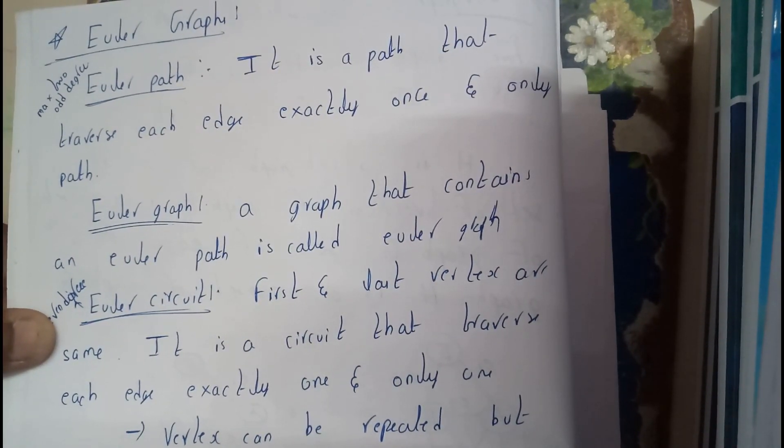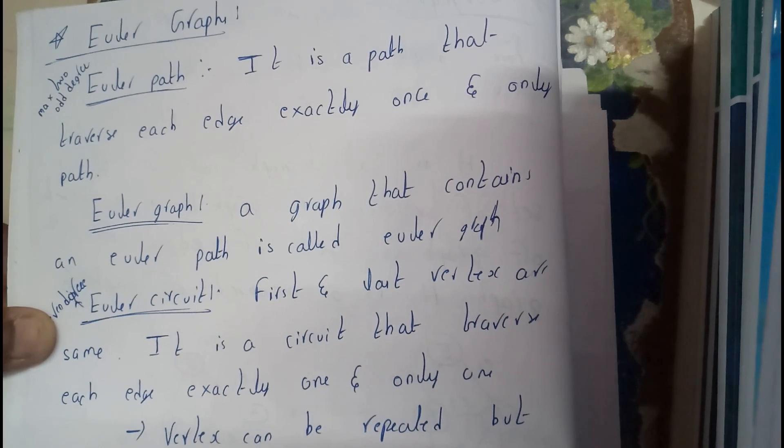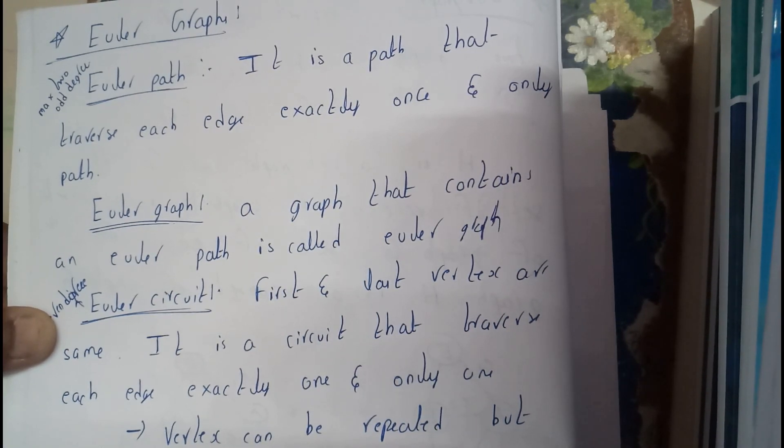First and last vertices are same. It is a circuit that traverses each edge exactly once and only once.